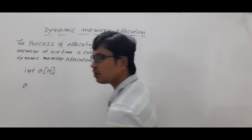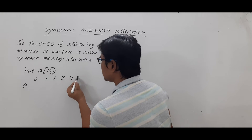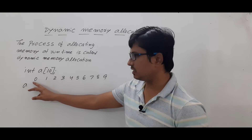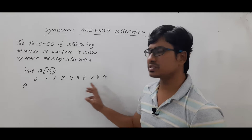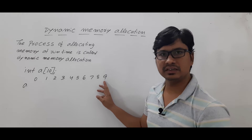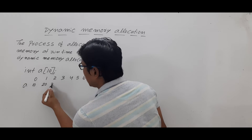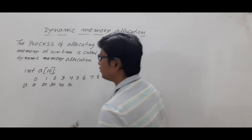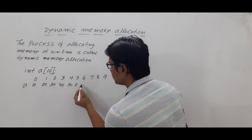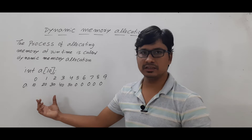The array index will start from 0 and go up to size minus 1. Here the size is 10, so 10 minus 1 is 9. Now let's say you have initialized five values such as 10, 20, 30, 40, 50 — then the remaining values will be 0 if you initialize only a few elements in the array.